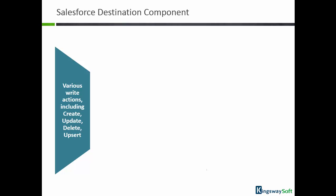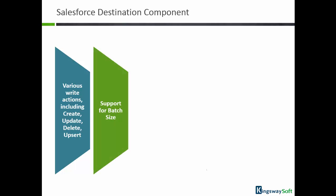Our destination component includes many features that help improve your ETL development and productivity. For example, we offer four different write actions. The toolkit also supports the Salesforce Upsert functionality, which provides a robust solution to manage incremental changes. Using the destination component, you can specify a different batch size based on your business requirements. We also have support for Salesforce Bulk API, which provides a fast way to process a large quantity of data in an asynchronous fashion.